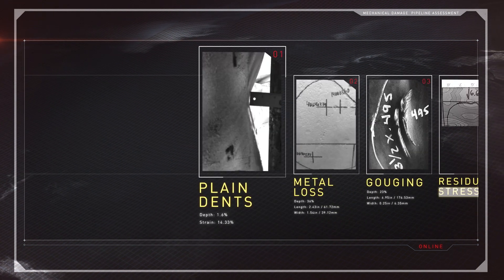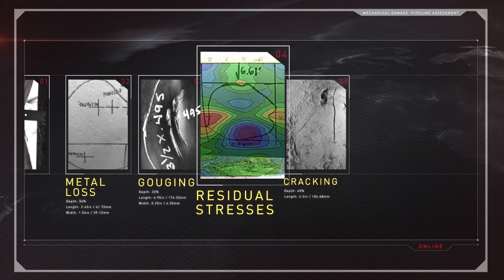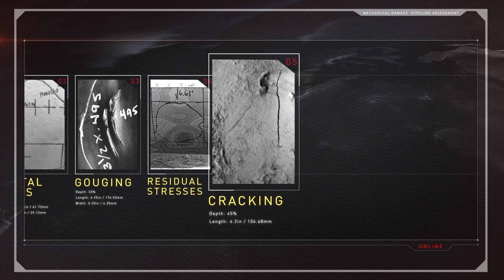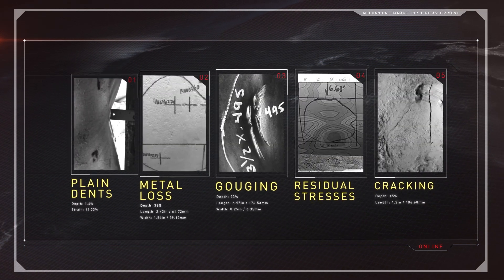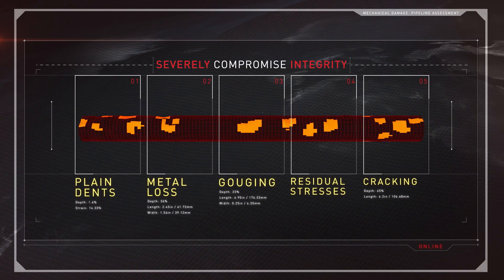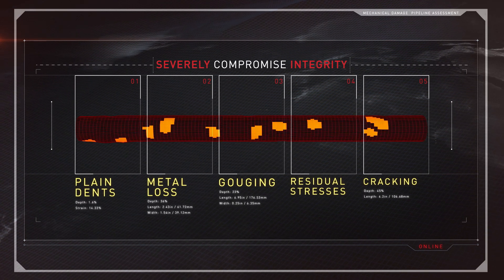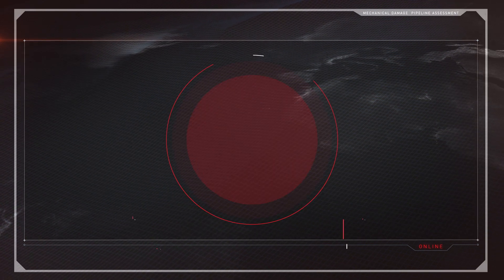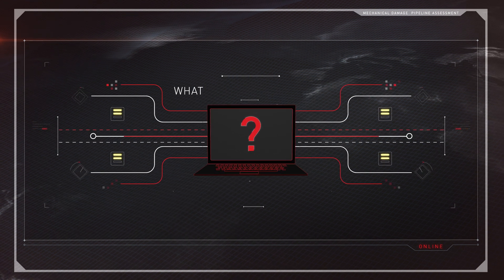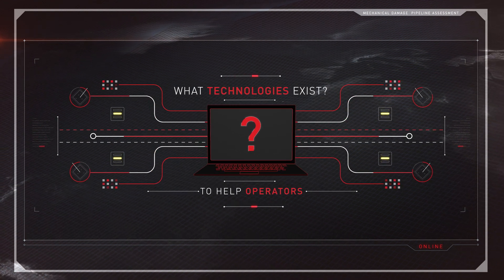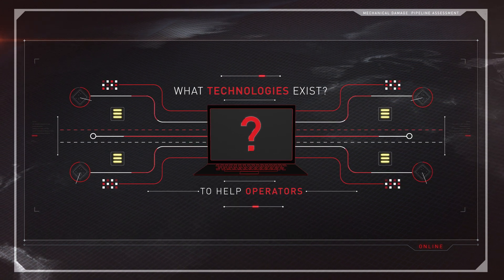Plain dents, metal loss, gouging, residual stresses, cracking — isolated or interacting. These flaws can severely compromise the integrity of a pipeline. So the question becomes: what technologies exist to help operators better understand these pervasive integrity threats?